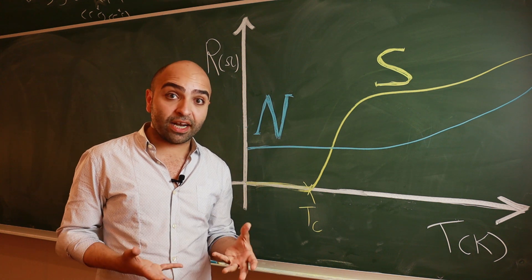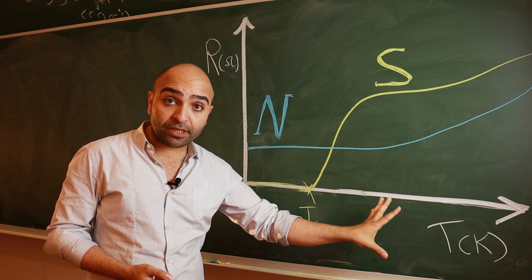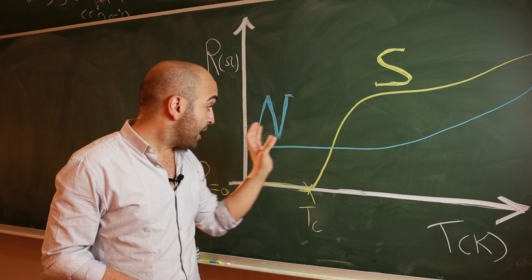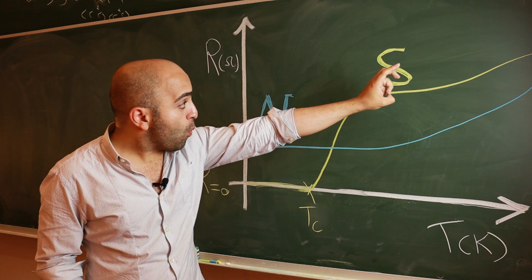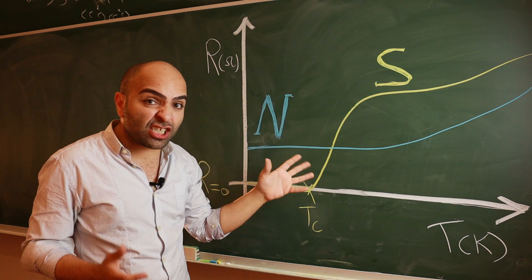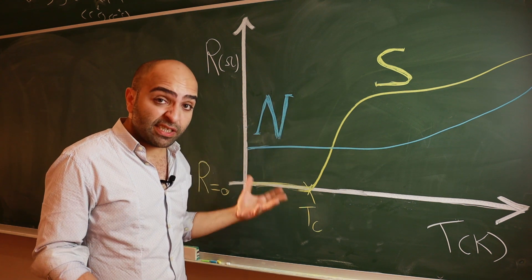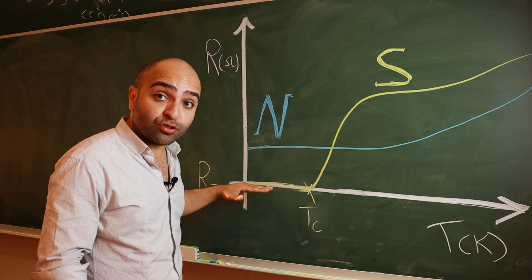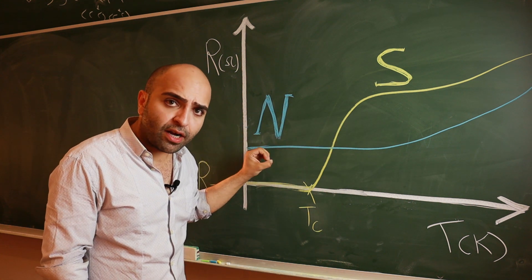To show you the problem more clearly, here I've drawn resistance as a function of temperature for a superconductor and a normal metal. And as you can see, when we cool down, there is a certain transition temperature, or TC, below which the resistivity of the superconductor goes to zero, while the normal metal still maintains a finite resistance.